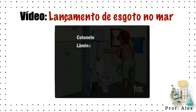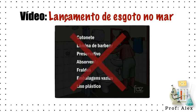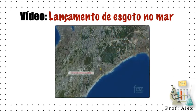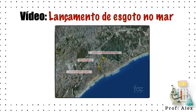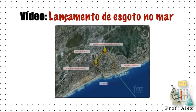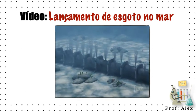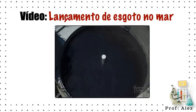Cotonete, lâmina de barbear, preservativo, absorvente, fraldas, embalagens vazias e lixo plástico não devem ser jogados no vaso sanitário. Esses detritos podem também entupir a rede de esgoto. O Emissário da Boca do Rio, operado pela Foz do Brasil, conduz o esgoto para alto mar a 3.670 metros da praia e o dispersa a 45 metros de profundidade, sem qualquer possibilidade de poluição das praias do litoral de Salvador.